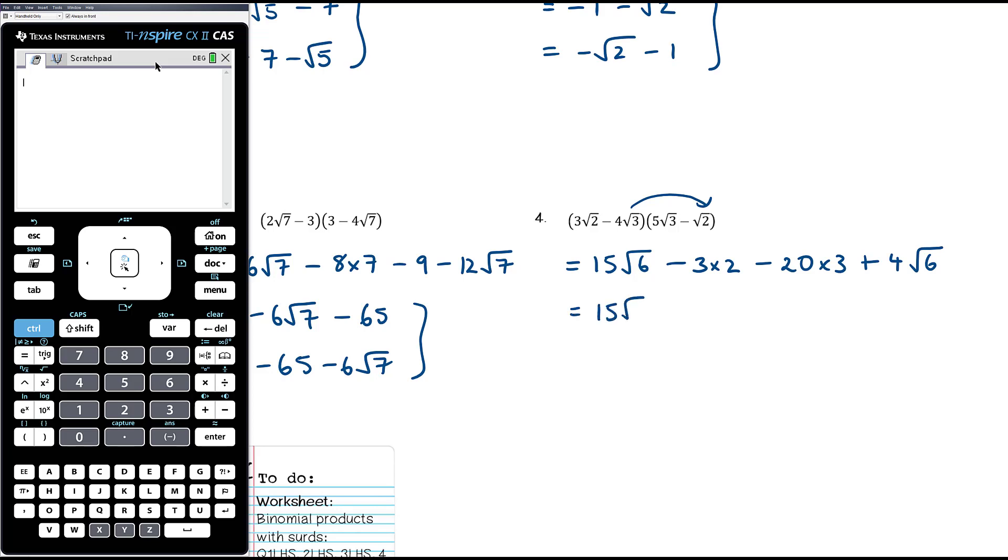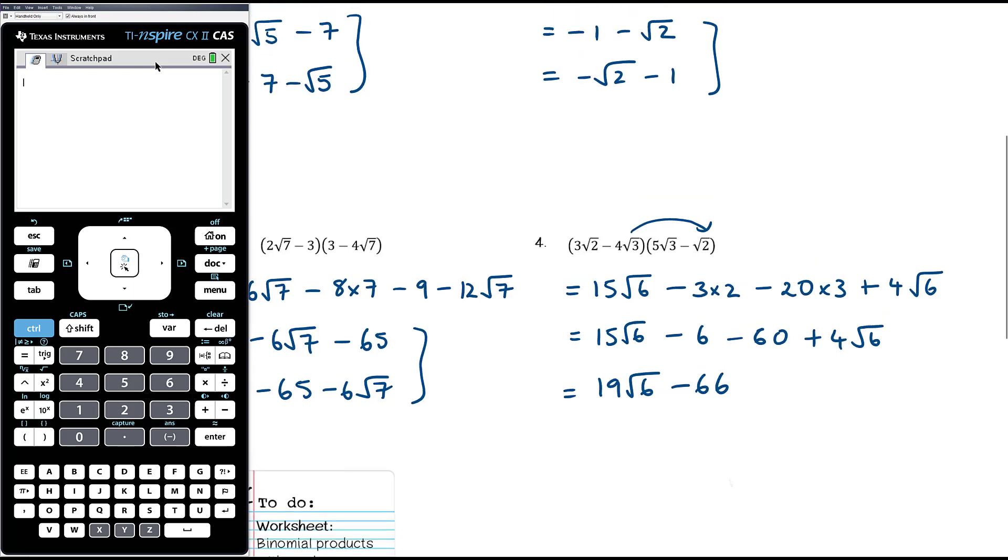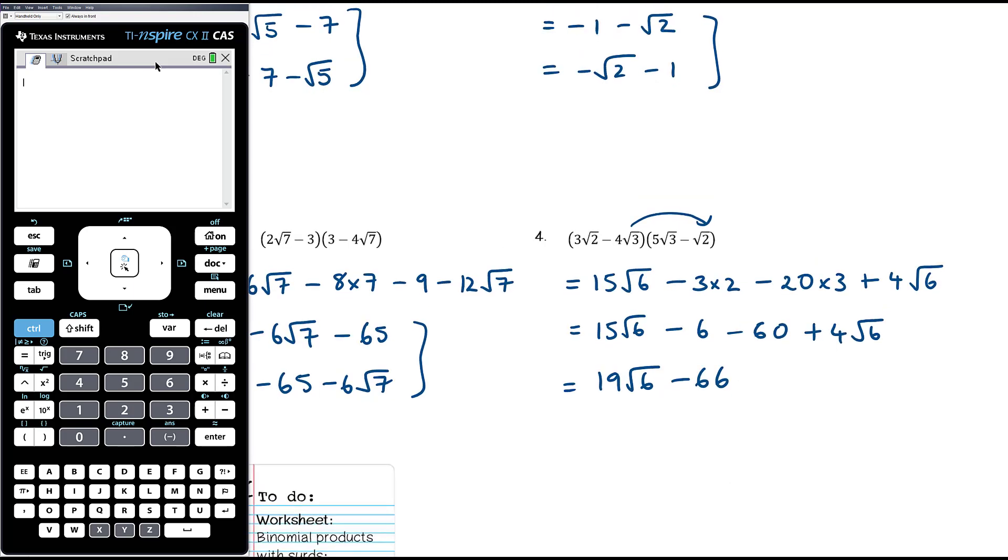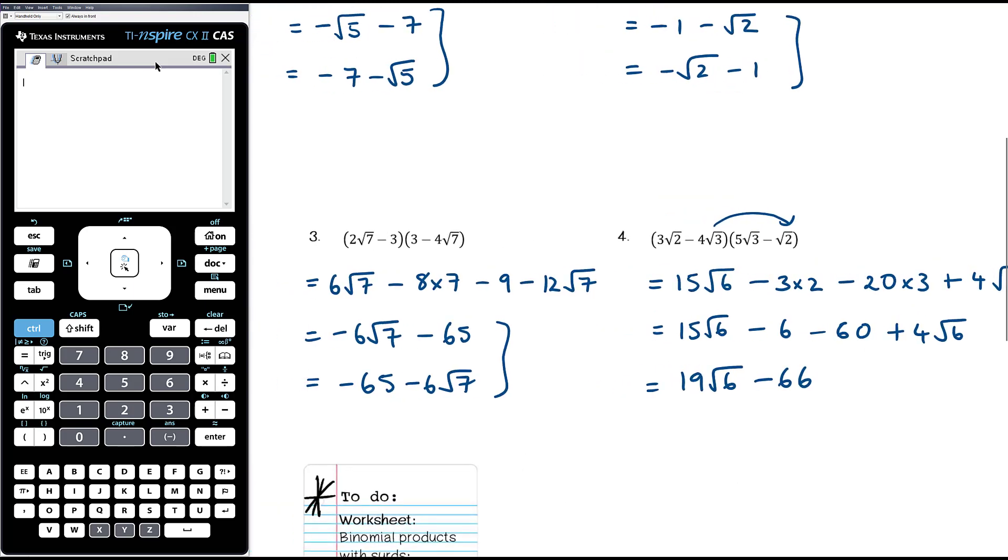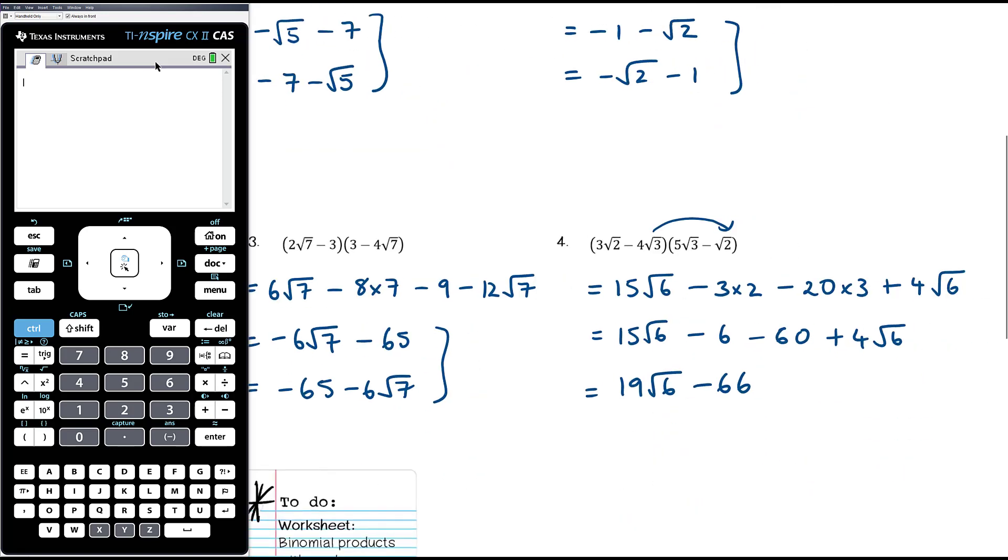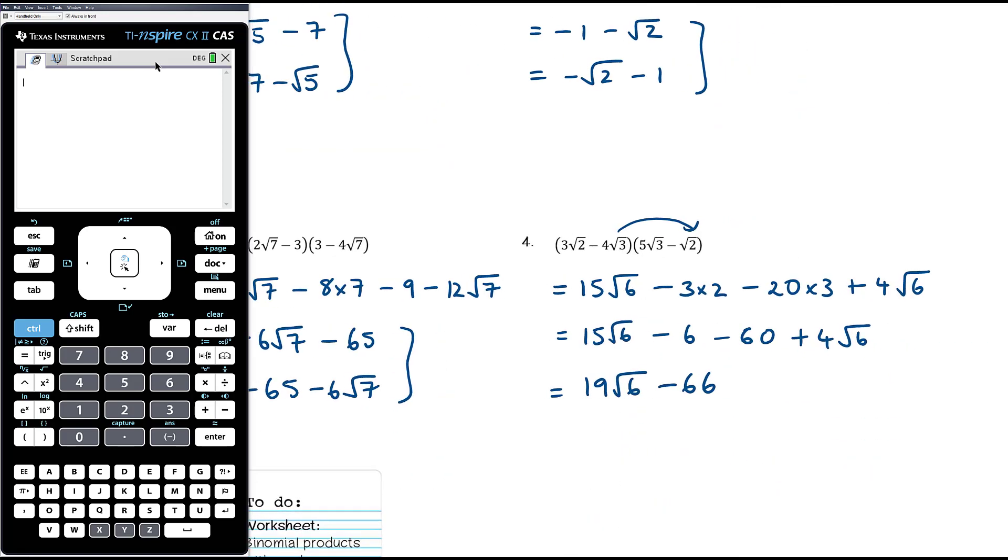So we've got 15 root 6 minus 6 minus 60 and plus 4 root 6. So we can collect like terms. 15 root 6 plus 4 root 6 is 19 root 6. Minus 6 minus 60 is negative 66. Just to bear in mind too, that it's quite possible, and none of these examples illustrated that, and my apologies for that, but it's quite possible that when we expand out the brackets, we get surds that then need to be simplified.